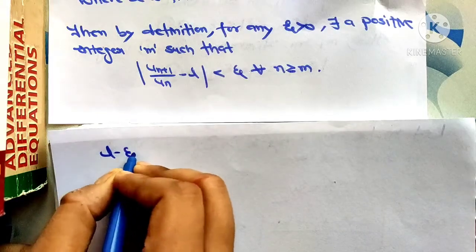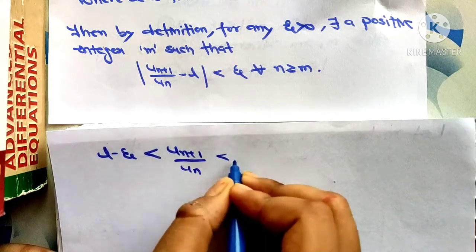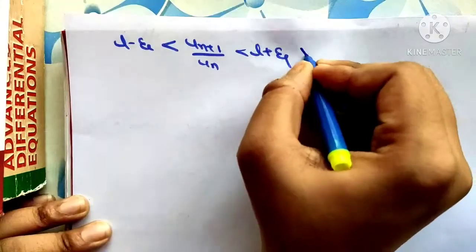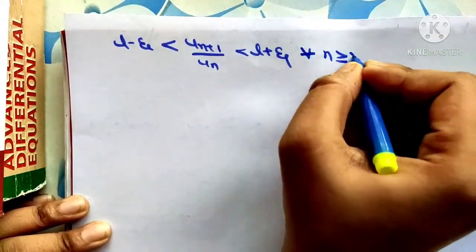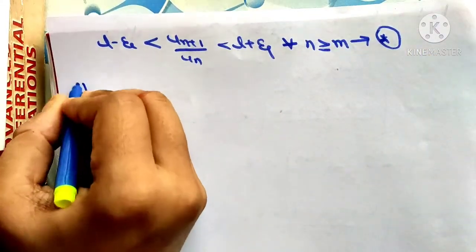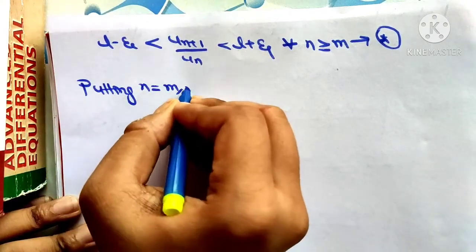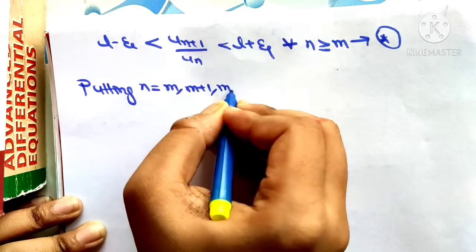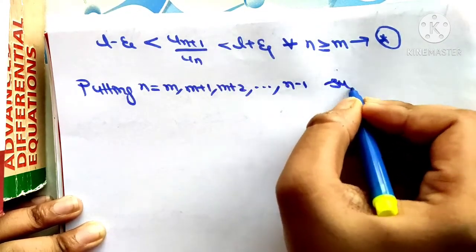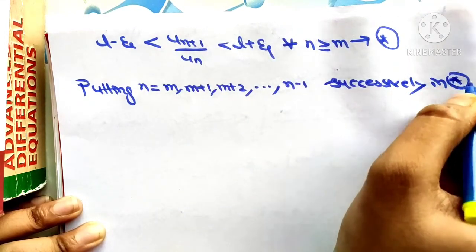This gives l minus epsilon less than a_{n+1} / a_n less than l plus epsilon for all n greater than or equal to m — call this inequality (star). Now putting n equal to m, m+1, m+2, up to n minus 1 successively in (star), we get: